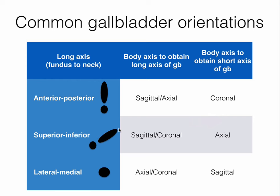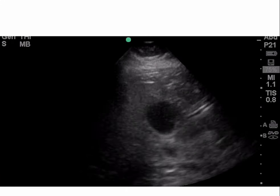The second orientation is a superior neck and inferior fundus — and to obtain a short axis view, all you need to do is rotate the probe 90 degrees. The third common orientation is lateral, with the fundus found laterally and the body and neck more medially. With the indicator pointed to the patient's head, the gallbladder will appear in cross section or short axis, and in order to get a long axis view, you rotate the probe 90 degrees.